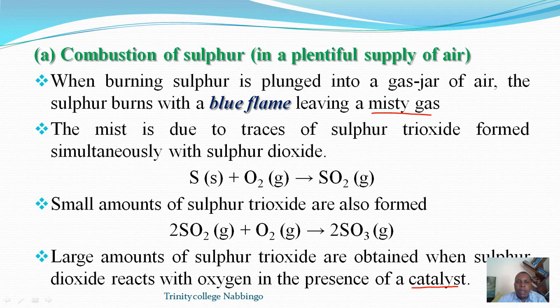To summarize: sulfur burns first of all with a characteristic blue flame and forms sulfur dioxide. However, we also see mist, and that mist is because of the formation of sulfur trioxide. Don't forget what is observed and the equation of reaction.